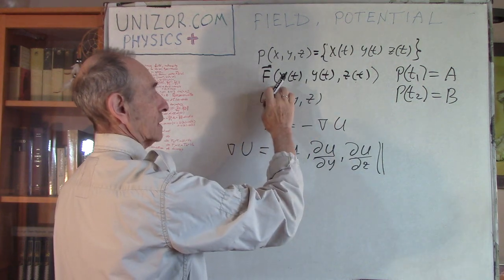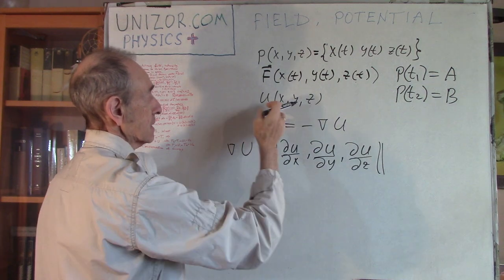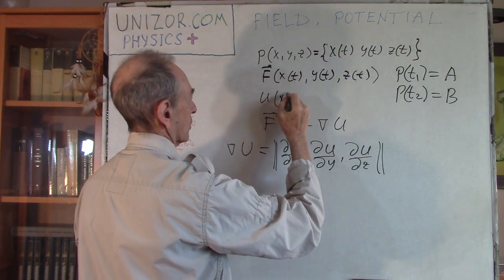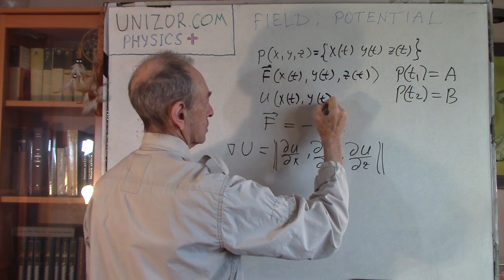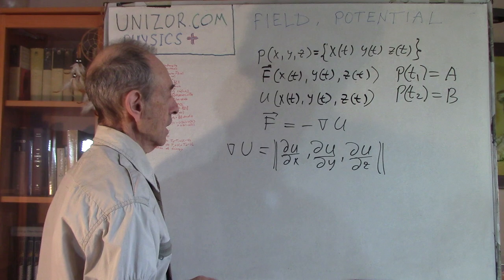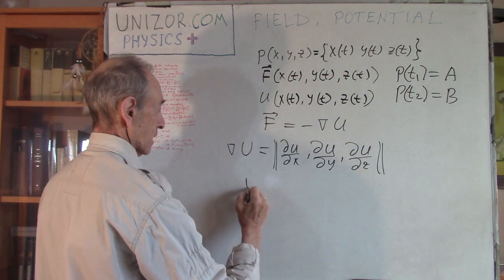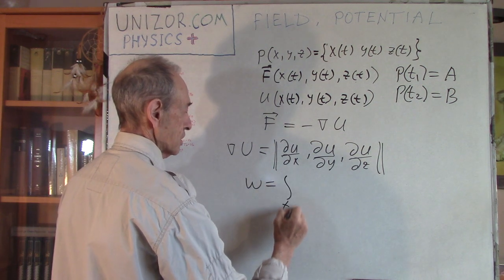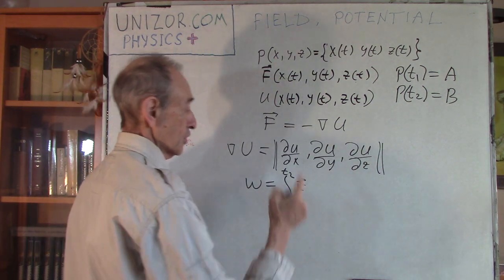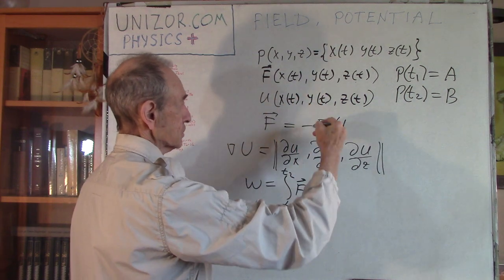Now let's talk about work. Work is the integral from t1 to t2 of the vector F(t) - meaning F of x(t), y(t), z(t) - scalar product with the differential of the radius vector r(t), which defines the trajectory. That was the definition of work done by the force along the trajectory defined by r(t).